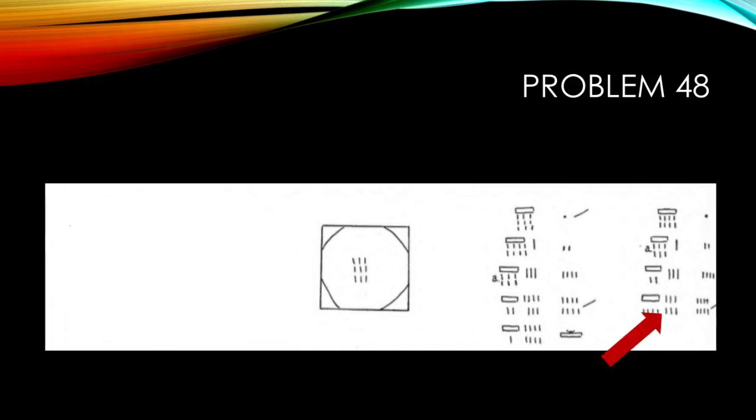So on the right, you have the multiplication to get to the area of the circle. And on the left, it's the multiplication to get to the area of the square.